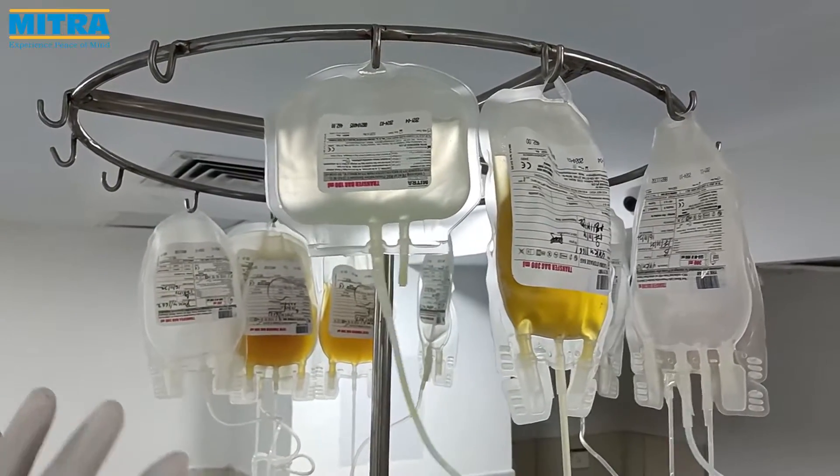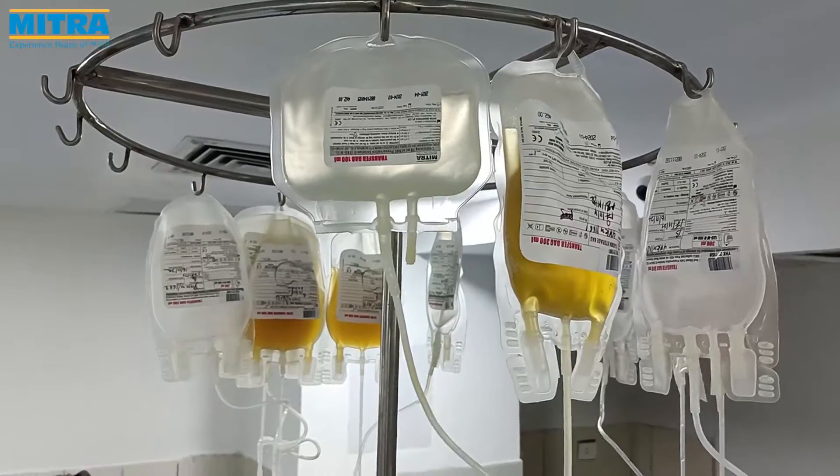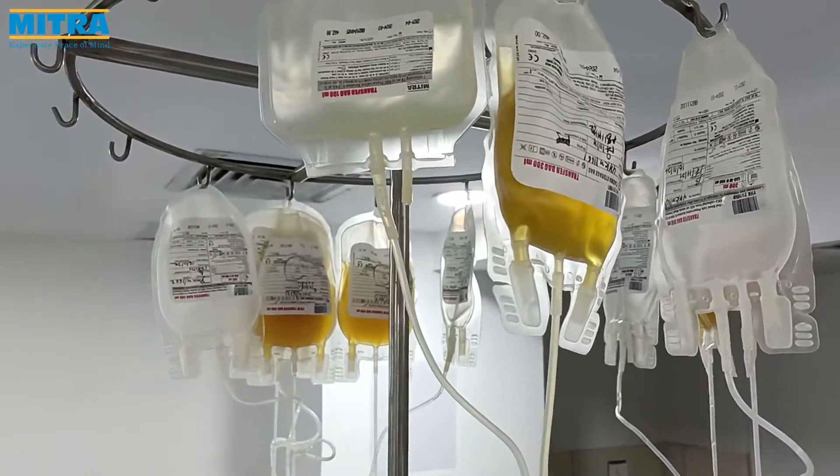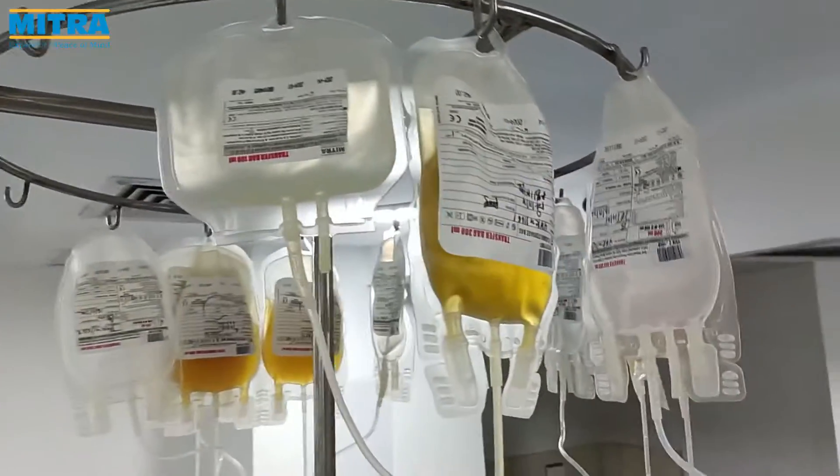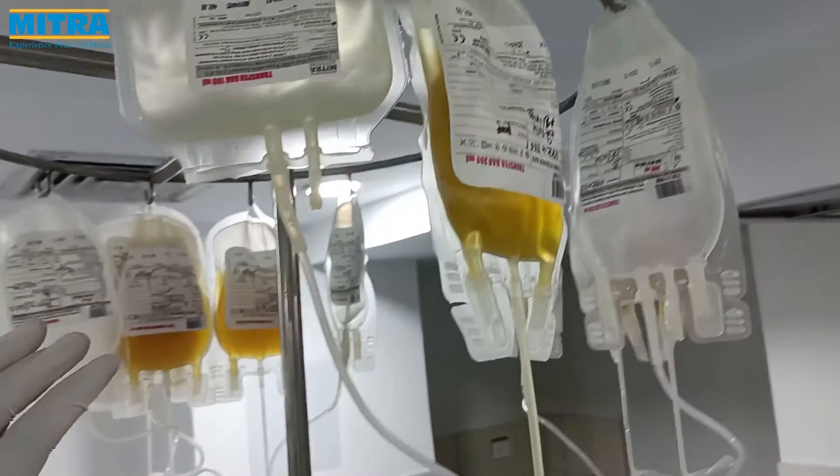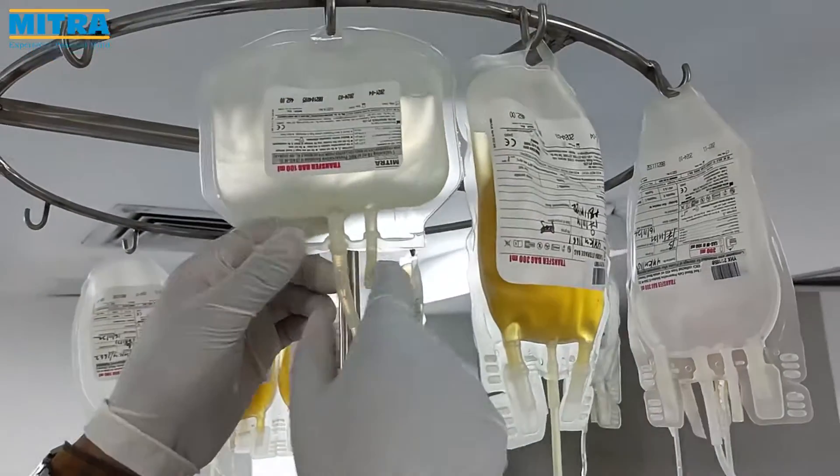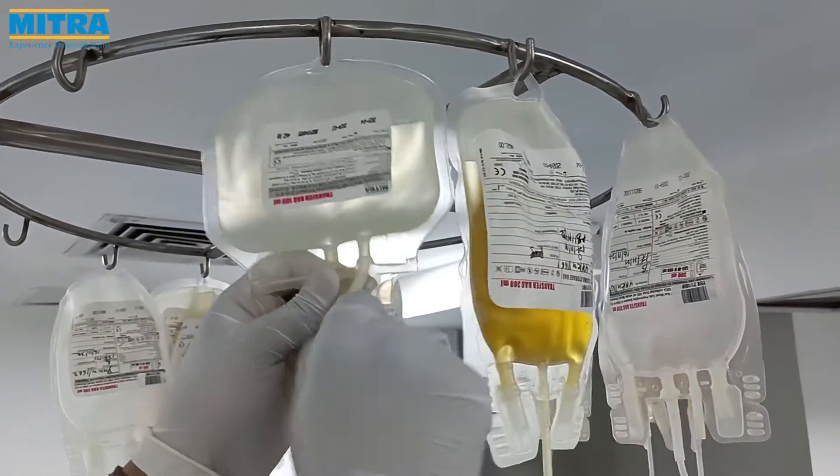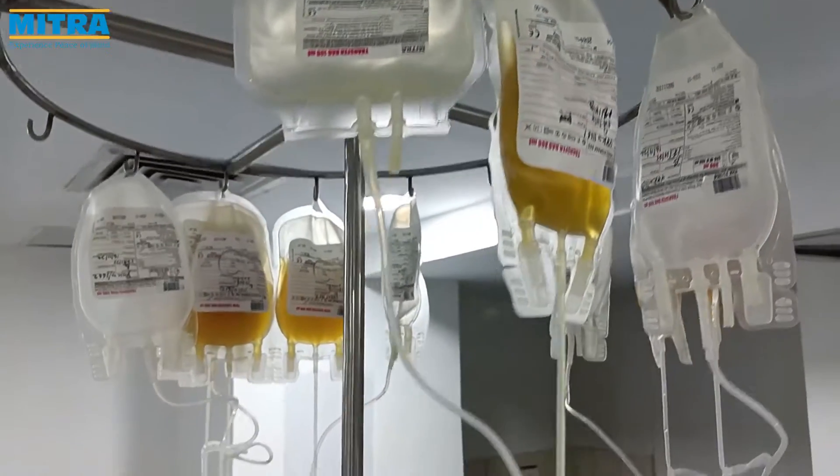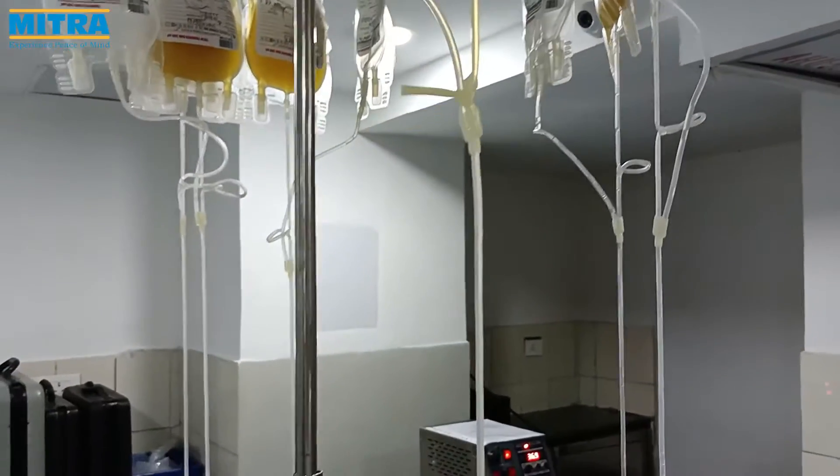Hang the sagam bag and plasma bags on an IV stand. Knot or clamp the plasma bag. Now break the breakaway valve of the sagam bag to allow the sagam to flow freely due to gravity force into the PRBC bag.